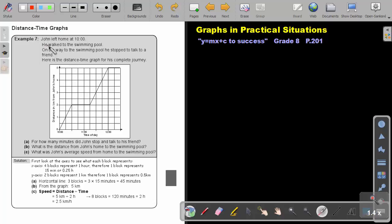Let's look at an example. John left home at 10 o'clock. He walked to the swimming pool. On the way to the swimming pool, he stopped to talk to a friend, and then he continues walking. Here is a distance graph for his journey. There he is at the swimming pool. So remember, here he stopped at the swimming pool.